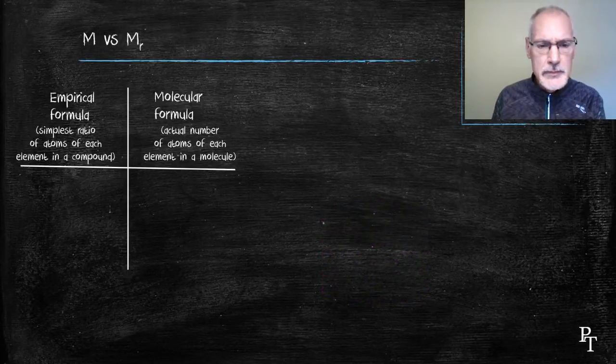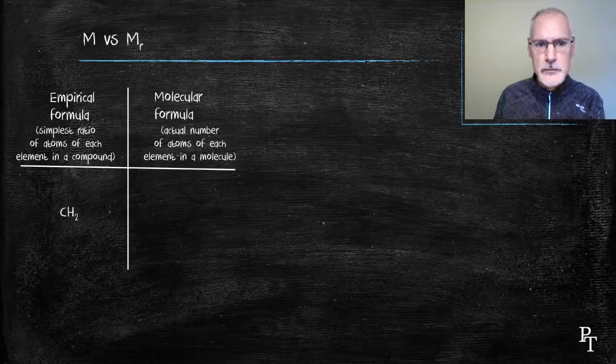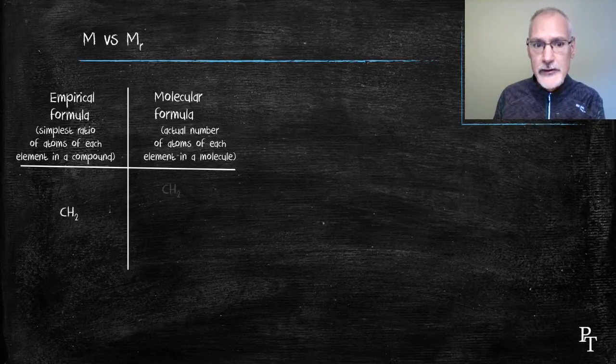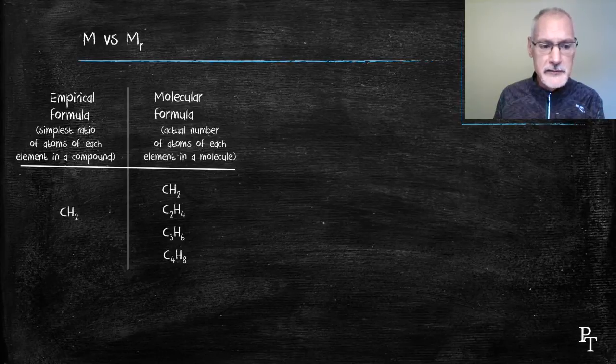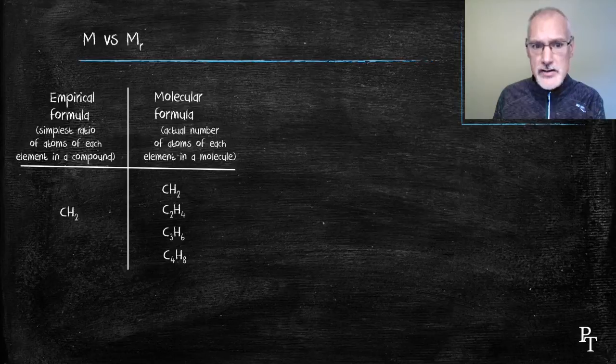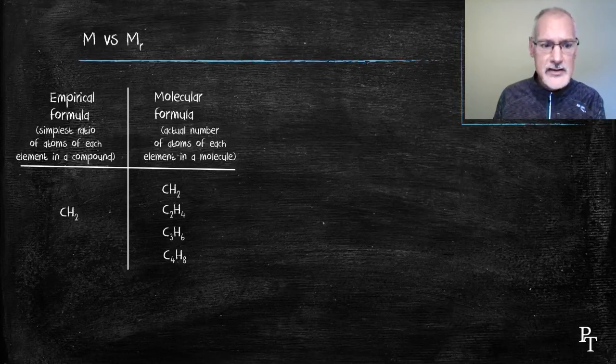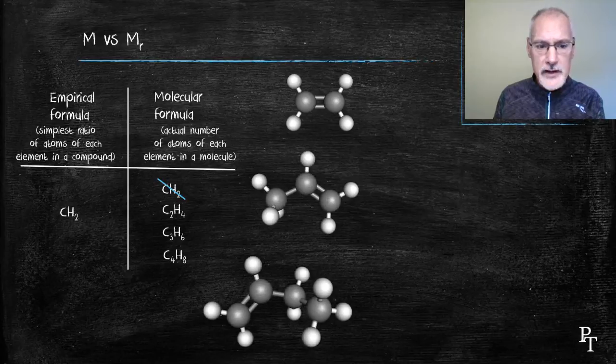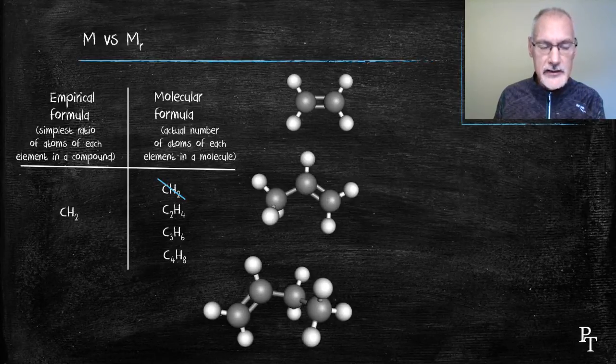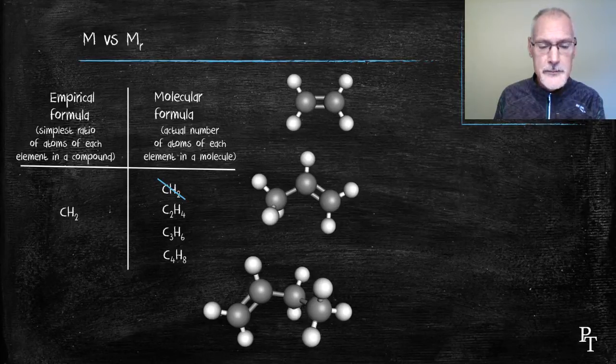Consider the empirical formula CH2. There are several substances that could share that particular empirical formula. The next thing I'm going to try to do is to draw each of these structures. CH2 itself is not possible to draw. However, C2H4 is, and likewise C3H6, C4H8, and so forth. I could essentially go further.